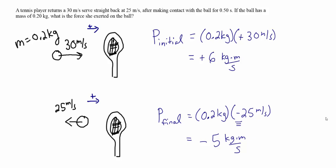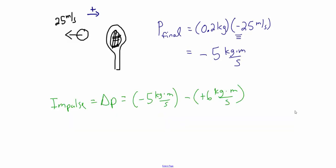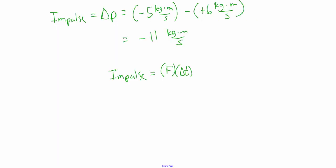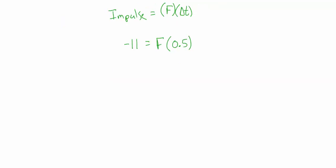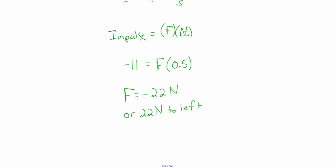From this we can calculate the change in momentum, or impulse: final momentum of negative 5 kilogram meters per second minus initial momentum of positive 6 kilogram meters per second equals negative 11 kilogram meters per second. For a constant force, impulse equals force times time. Assuming the racket force is constant, negative 11 kilogram meters per second equals force times 0.5 seconds, giving a force of negative 22 newtons, or 22 newtons to the left.